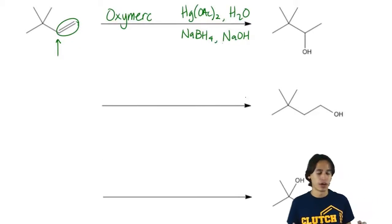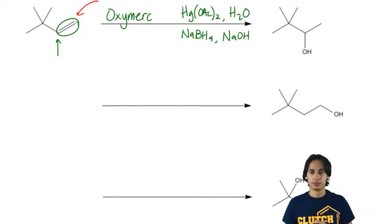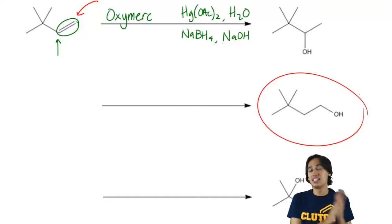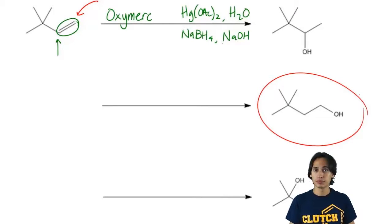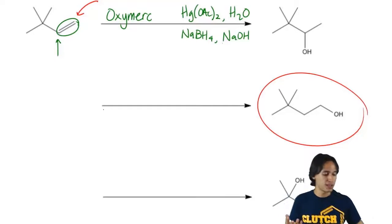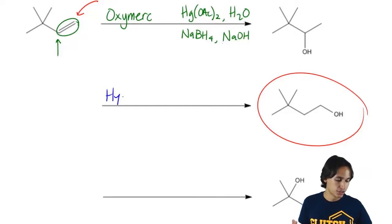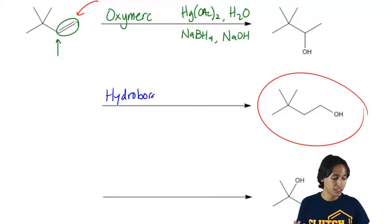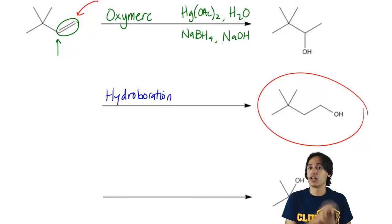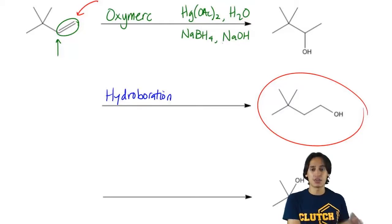What if we take that same double bond but want to add the alcohol here instead? Notice that in this molecule the alcohol is on the least substituted position. This is an addition reaction, but it has a completely different name — hydroboration. Hydroboration is unique because it's the only anti-Markovnikov way we have to add an alcohol, placing it at the least substituted position.